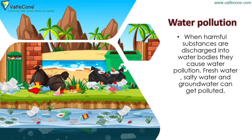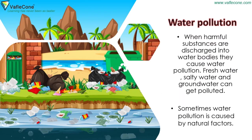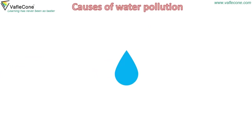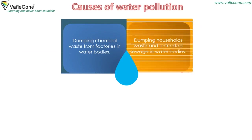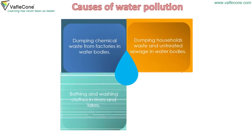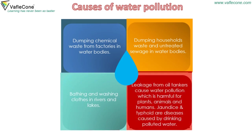Fresh water, salty water, and ground water can get polluted. Sometimes water pollution is caused by natural factors. Causes of water pollution: dumping chemical waste from factories in water bodies, dumping household waste and untreated sewage in water bodies, bathing and washing clothes in rivers and lakes, and leakage from oil tankers cause water pollution, which is very harmful for plants, animals, and humans. Jaundice and typhoid are diseases caused by drinking polluted water.